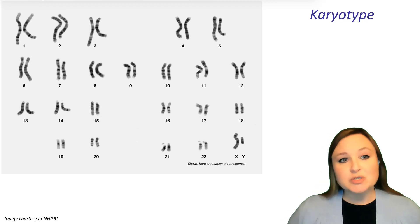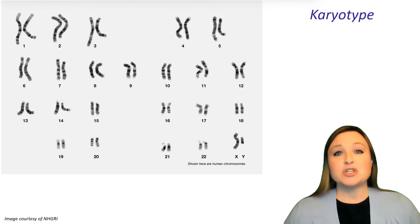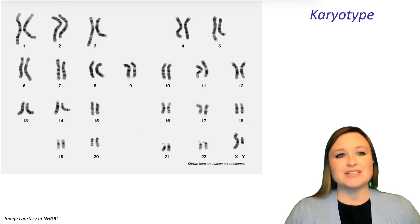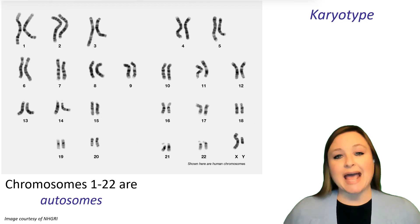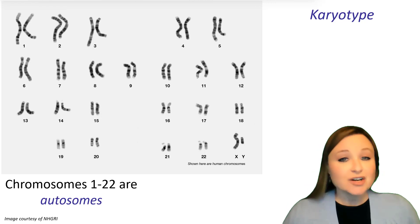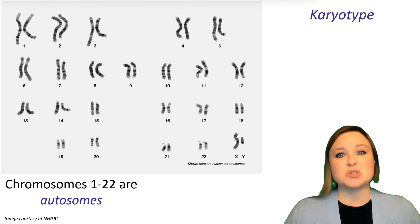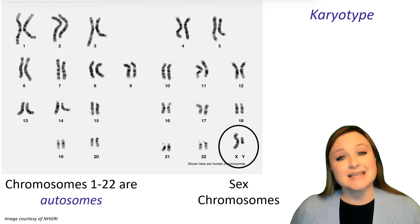There are 46 in total, and they are in pairs. So you can see there are two chromosome 1, two chromosome 2, and so forth — 23 different pairs. Now pairs 1 through 22 are known as autosomes. The 23rd pair is a special pair; these are known as the sex chromosomes.